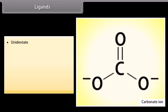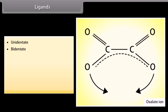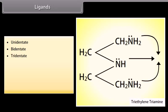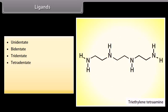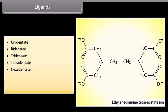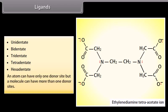Unidentate: with one donor site, e.g., carbonate ion. Bidentate: with two donor sites, e.g., oxalate ion. Tridentate: with three donor sites, e.g., triethylene triamine. Tetradentate: with four donor sites, e.g., triethylene tetraamine. Hexadentate: with six donor sites, e.g., ethylenediamine tetraacetate ion. An atom can have only one donor site, but a molecule can have more than one donor sites.